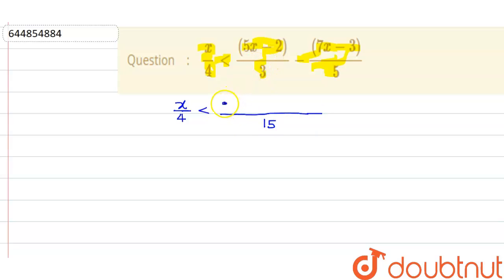And this minus minus becomes plus, so this will be plus 9. Now if I cross multiply this, what I get is: